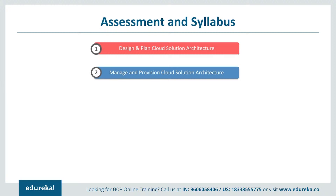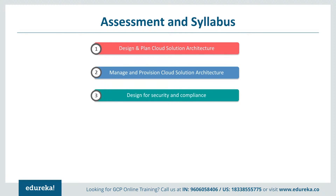Section 2 covers managing and provisioning cloud solution architecture. One should be good at configuring network topologies, including extending to on-premises or hybrid networks and extending to multi-cloud environments, as well as security features and data protection. Other topics include configuring individual storage systems, data storage, application data processing, compute processing, and security and access management.